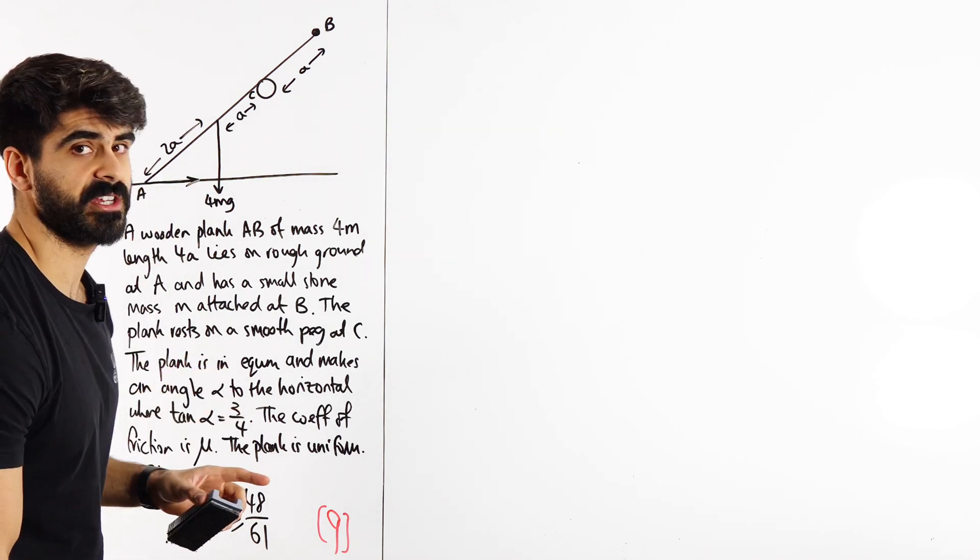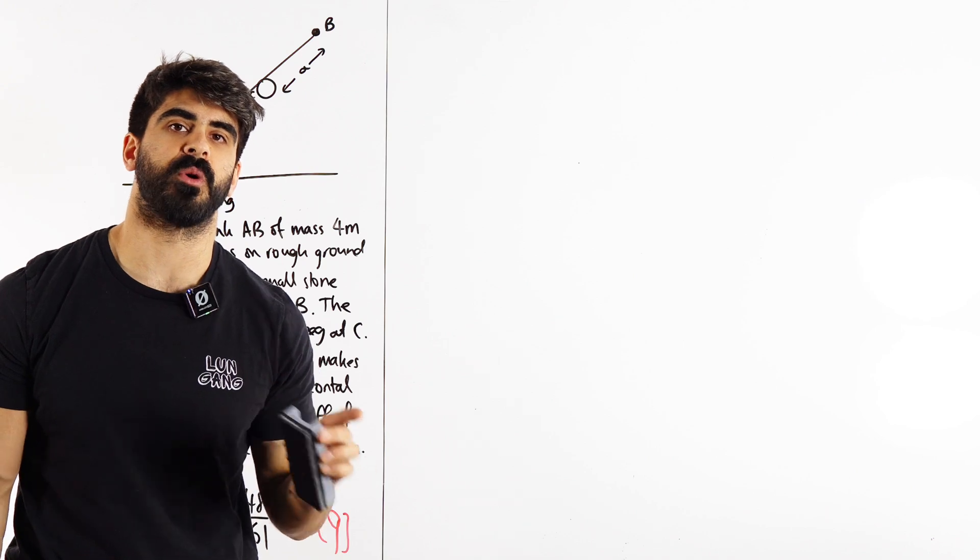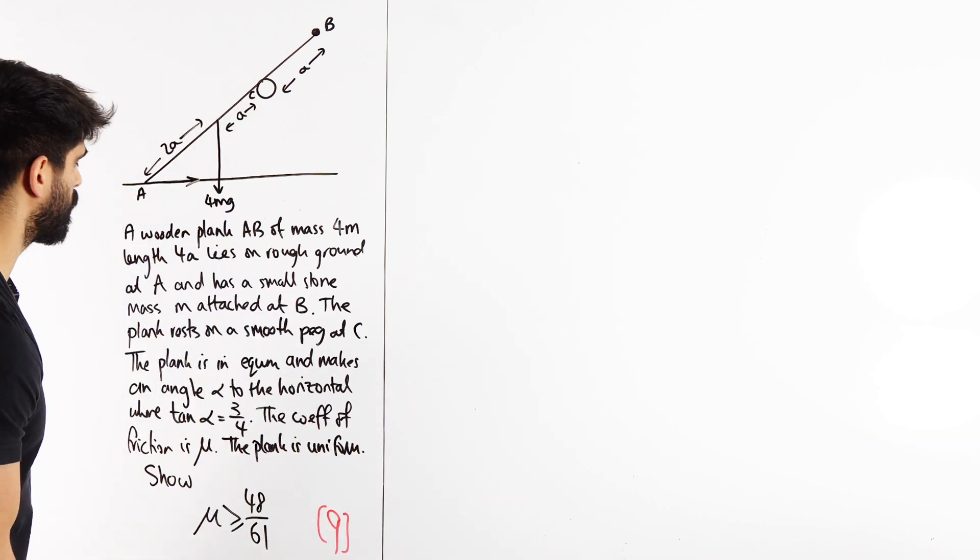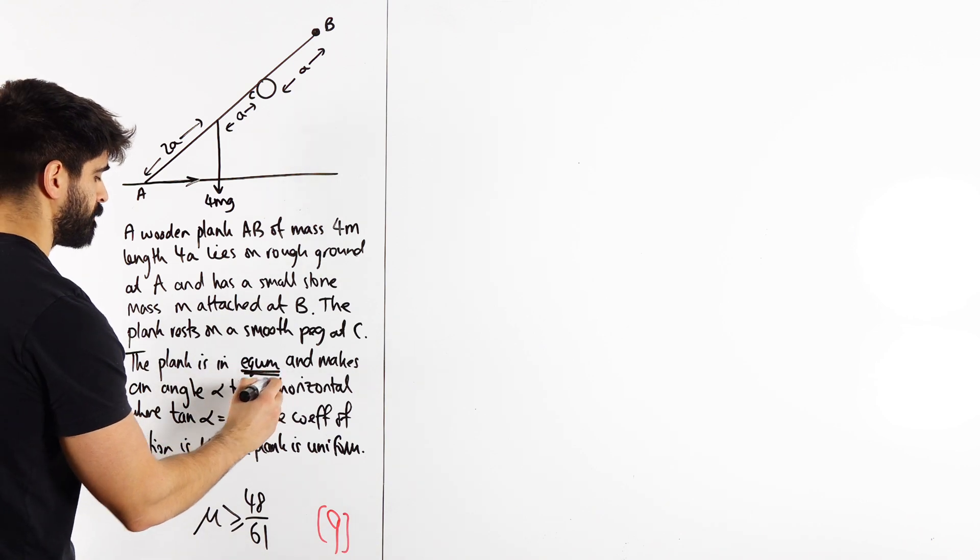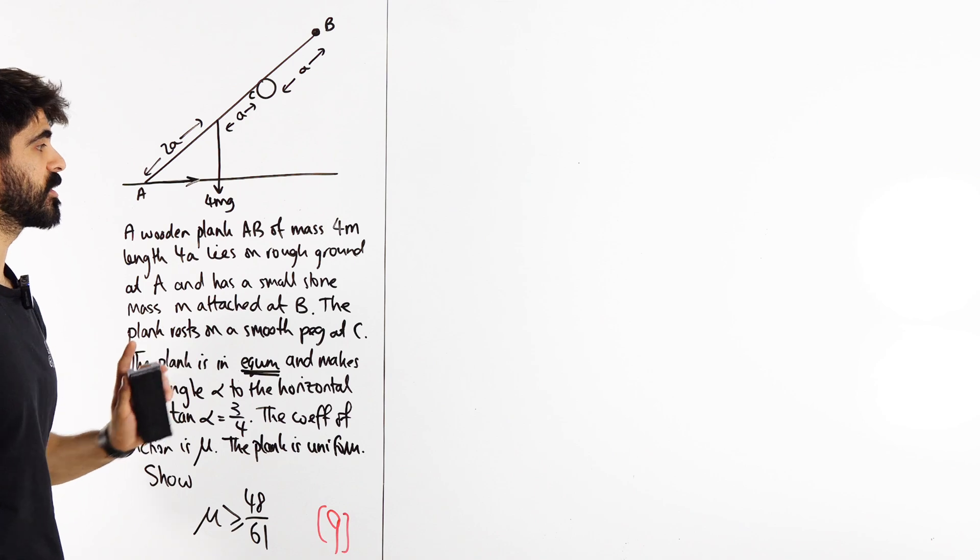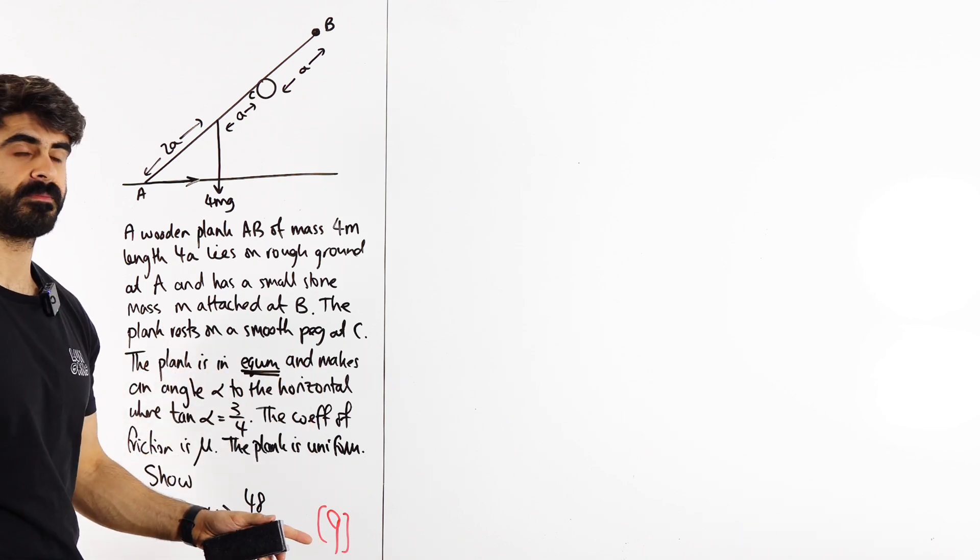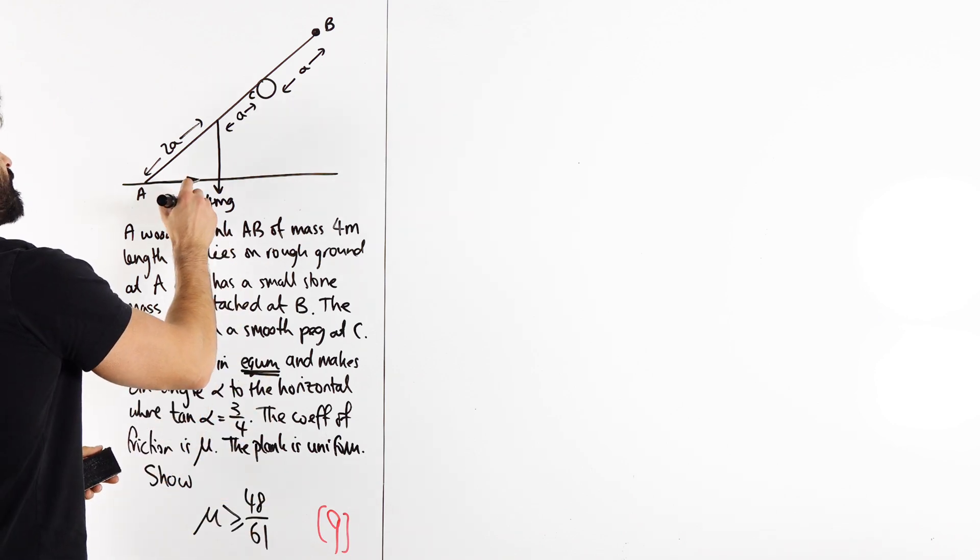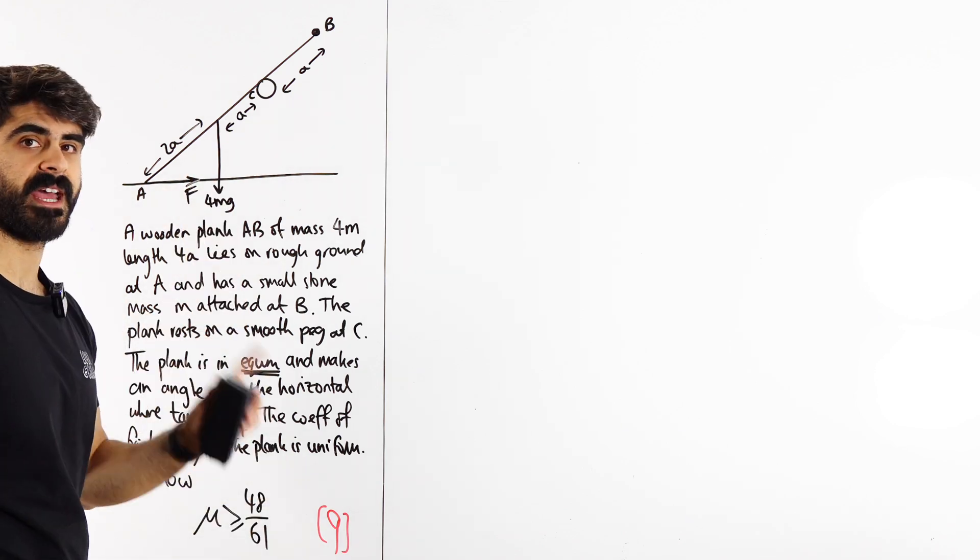Now, we have to really consider what's happening here. Are you going to put mu R, which is F max, or are you going to use F? In the question it says equilibrium, which means friction is not necessarily at its maximum. It's just opposing whatever's opposing it. Yeah, it's not moving. Friction does not necessarily have to be at its maximum. We use F.